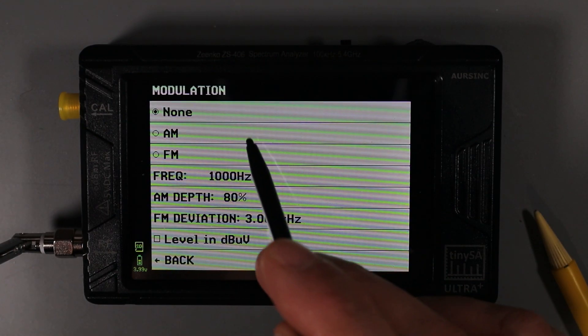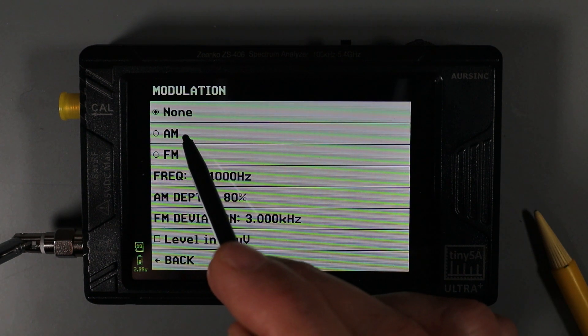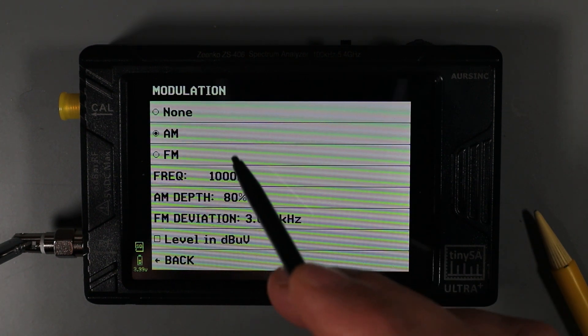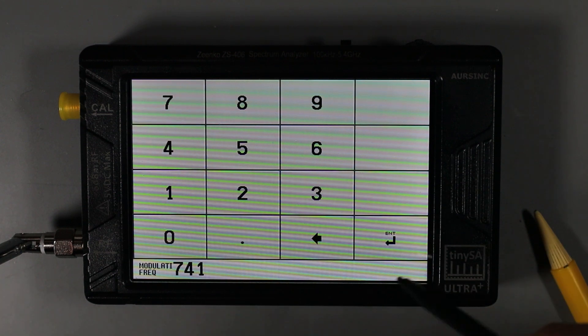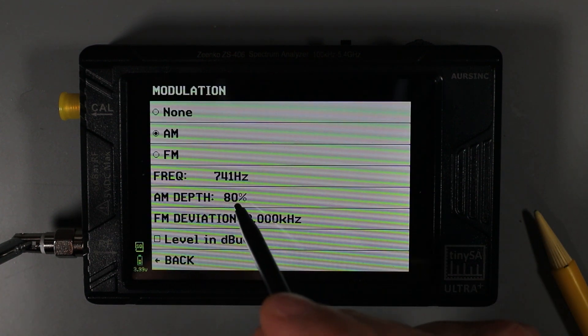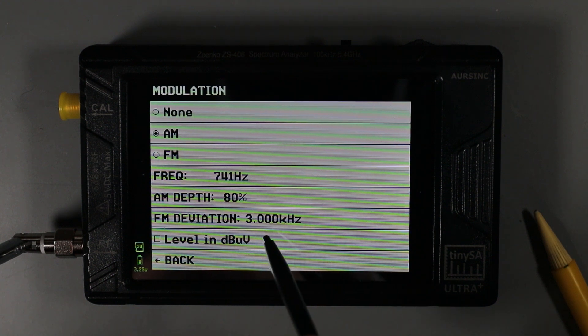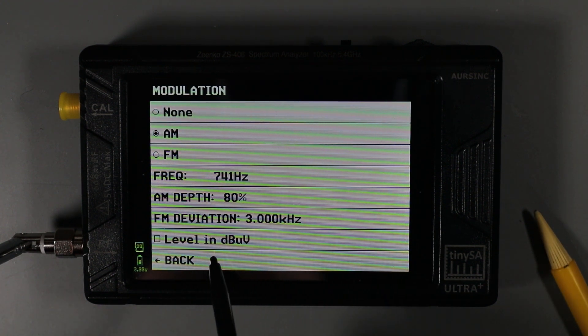We can also increment and decrement using these sections in the field. This field allows us to set modulation type. We can choose between AM or FM modulation, and we can set a frequency of the tone that we want to modulate. We can set the AM modulation depth or the FM deviation, and we can also switch the level to decibels per microvolt.